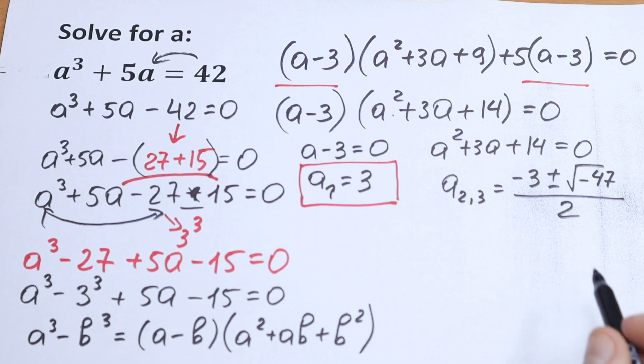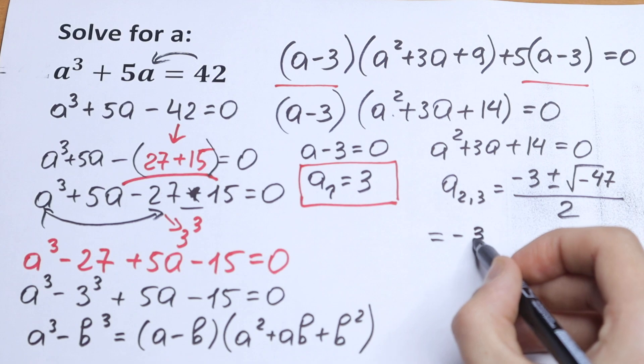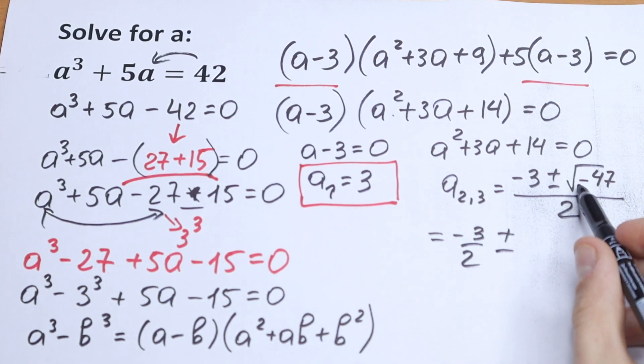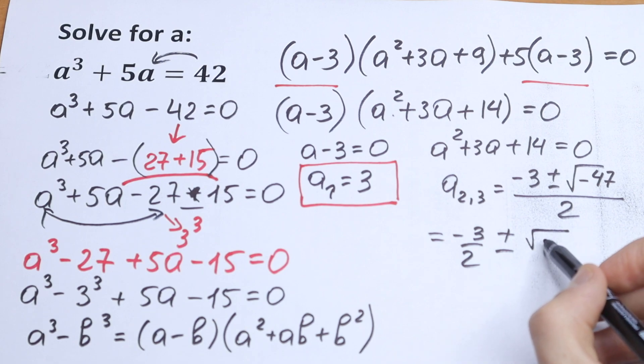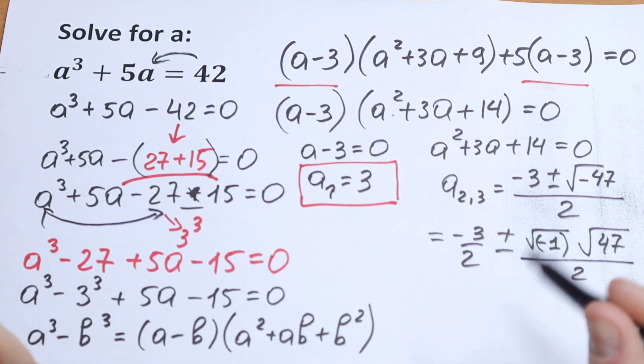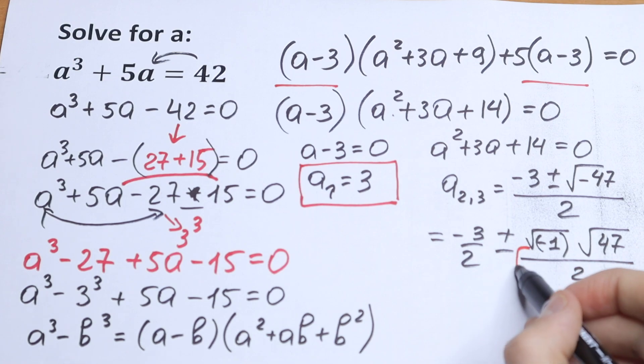Let's simplify this a little bit because this will be complex root right here. So we can write this as minus 3 over 2 plus minus. And this square root of minus 47 I can write as minus square root of minus 1 times square root of 47 over 2. This will be our i because we all know that square root of minus 1 equal to i.